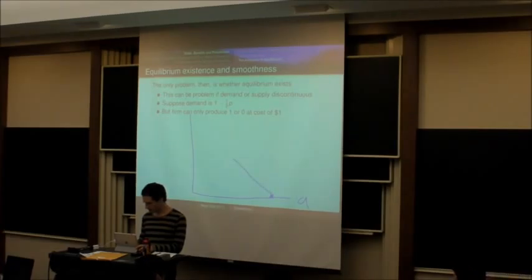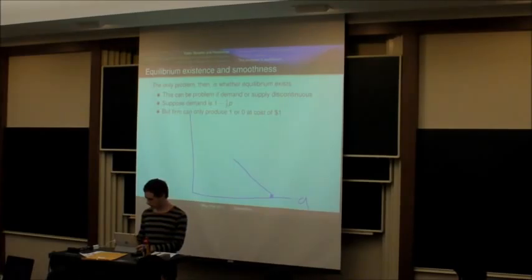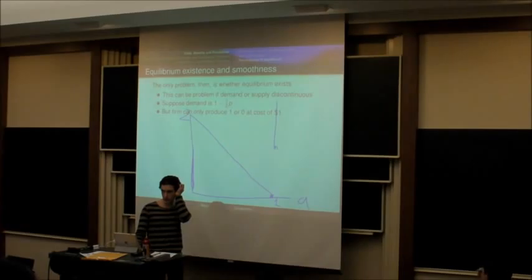And the maximum price, at a price of zero, they're willing to buy one unit. So this is one down here, and they're willing to pay up to $2 for the first unit, and the firm can only produce one unit or zero. So its supply function is just like that and that. So there's no intersection between this demand function and this supply function.